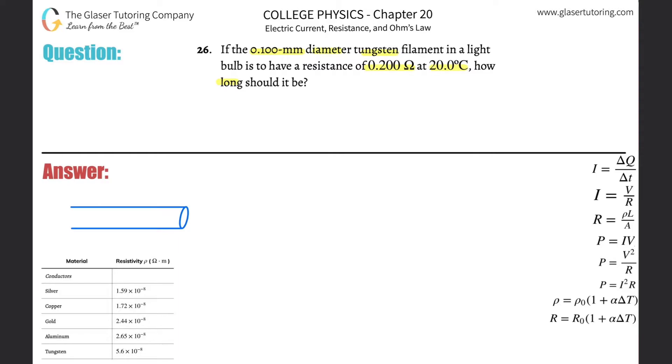They're telling us the diameter of the tungsten filament. Now we know that in terms of—and by the way, check out number 24, I went through a detailed review of this particular topic of resistance and its relationship basically to resistivity, length, and cross-sectional area.